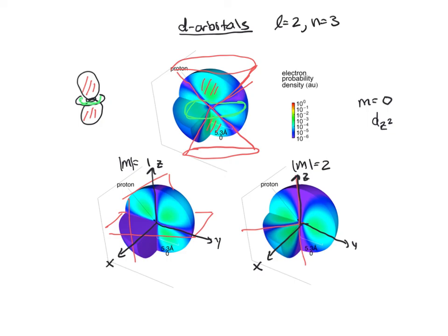When I take m equals plus or minus one and do linear combinations, I get the d_xz and d_yz orbitals. When I do linear combinations of plus or minus two, I get the d_xy and the d_x²-y² combinations.